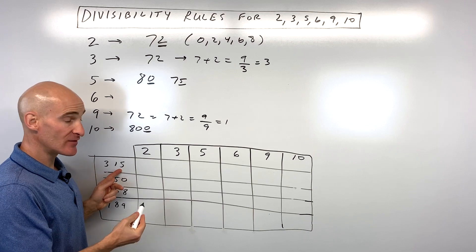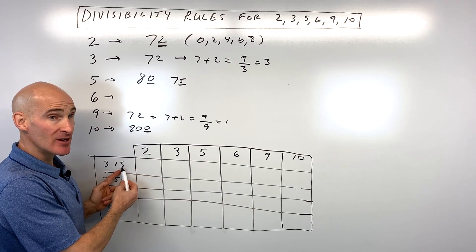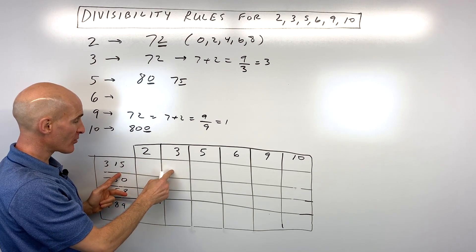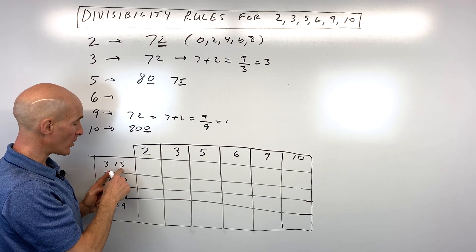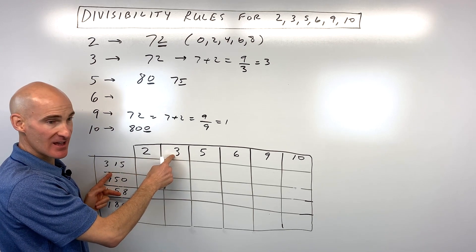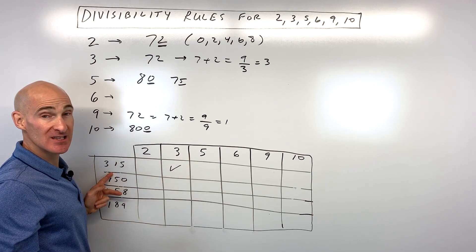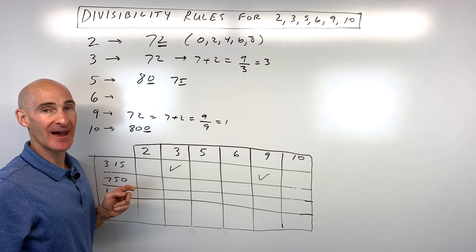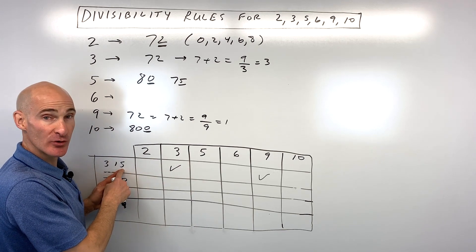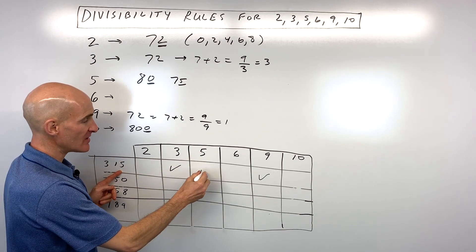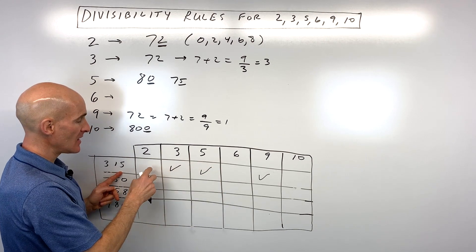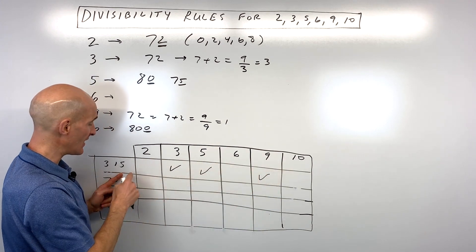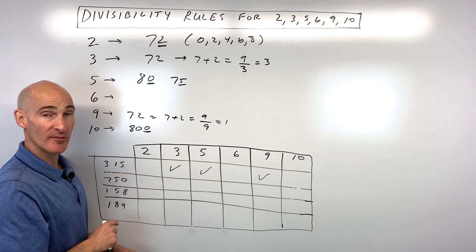Let's start with 315. Is it divisible by 2? Well, it doesn't end in an even number — 0, 2, 4, 6, or 8 — so it's not divisible by 2. How about for 3? Let's add up the digits: 3 plus 1 is 4, plus 5 is 9. Is 9 divisible by 3? Yes, so 315 is divisible by 3. Is 9 divisible by 9? Yes, so 315 is also divisible by 9. How about for 5? Does it end in a 0 or a 5? Yes, so it's divisible by 5. Is it divisible by 6? It has to be divisible by 2 and 3, so it's not divisible by 6. Does it end in a 0? No, so it's not divisible by 10.